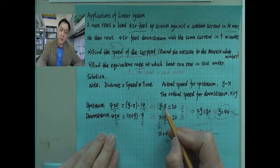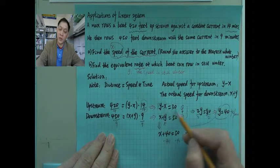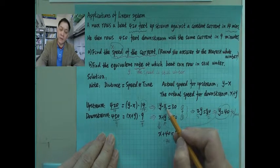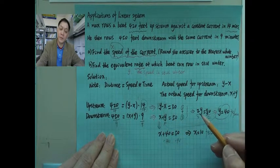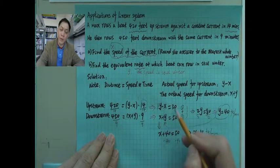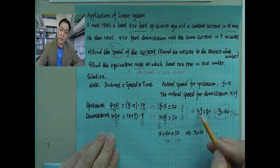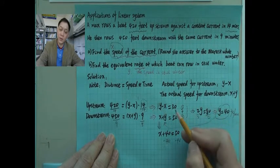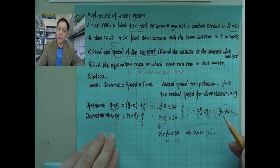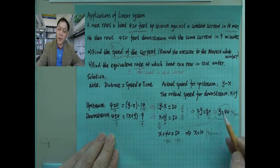We notice the first equation has negative x and the second has positive x, so adding both equations cancels x. We get 2y on the left and 30 plus 50, which is 80, on the right. Dividing both sides by 2 gives y equals 40.